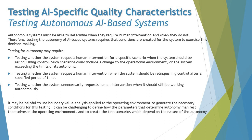We spoke about cars like Tesla, which takes control from human beings and gives it back when really needed. Therefore, testing the autonomy of an AI-based system requires that conditions are created for the system to exercise its decision-making.